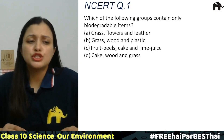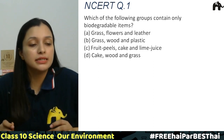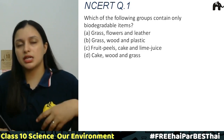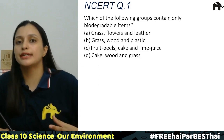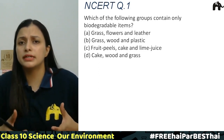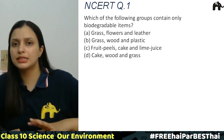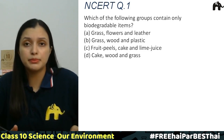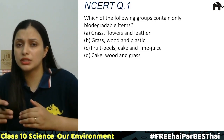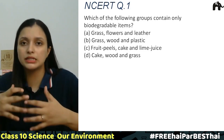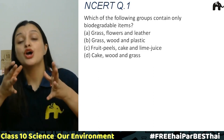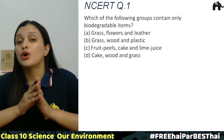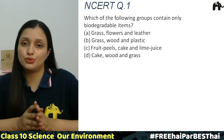Question number one: which of the following groups contain only biodegradable items? Biodegradable items वो substances होते हैं जो nature में degrade हो जाते हैं। जो भी decomposers और microorganisms हैं वो इनको decompose कर देते हैं और यह harmless substances में convert हो जाते हैं। Non-biodegradable substances nature में degrade नहीं होते, उनको degrade होने में billions of years लग जाते हैं या वो degrade होते ही नहीं।